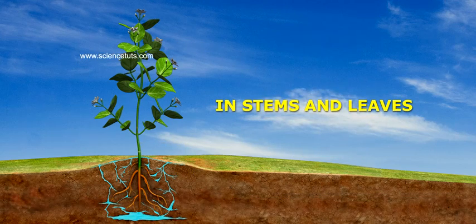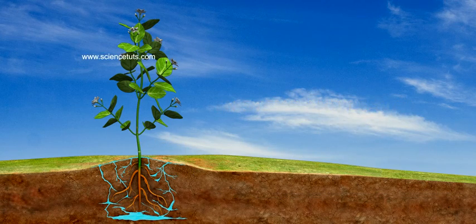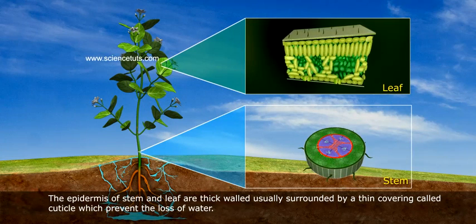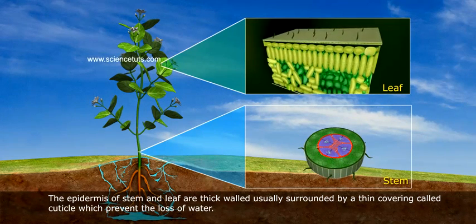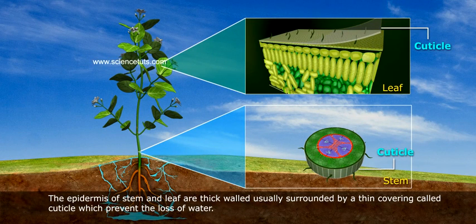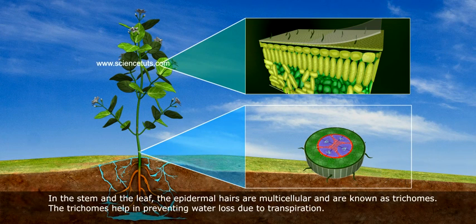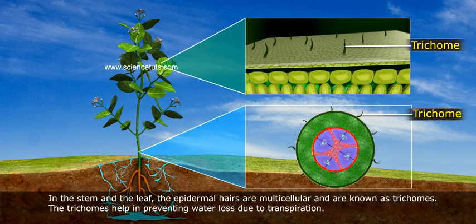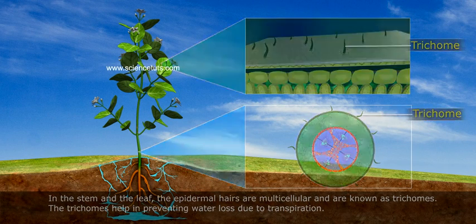In stems and leaves, the epidermis of the stem and leaf are thick-walled, usually surrounded by a thin covering called cuticle, which prevents the loss of water. In the stem and the leaf, the epidermal hairs are multicellular and are known as trichomes. The trichomes help in preventing water loss due to transpiration.